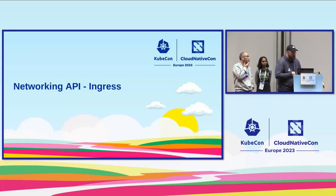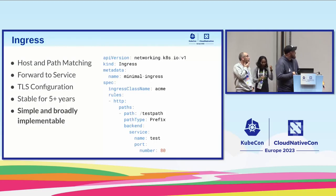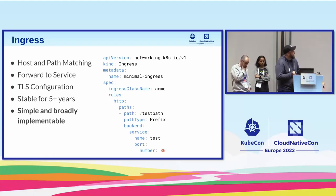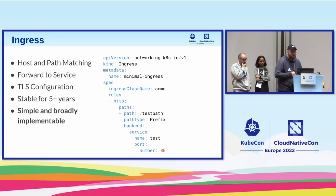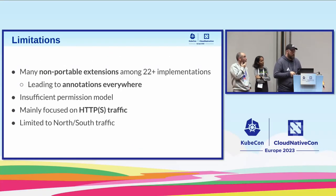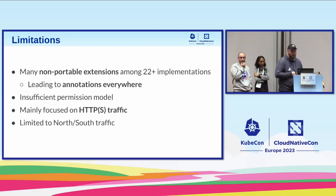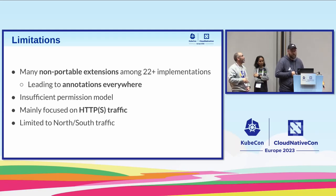Building on top of that, we have the ingress API, which is very common. Most people are aware of it. It's been around for five-plus years. It does basic host and path matching, TLS configuration, and is simply and broadly implemented — there are 20-plus implementations of ingress. There are some limitations we ran into: there are many non-portable extensions, resulting in an annotations wild west where basically everything an ingress controller would want to do ended up with a custom annotation, until no two ingresses do anything remotely similar to each other.